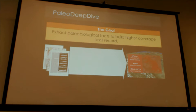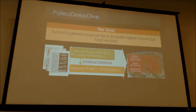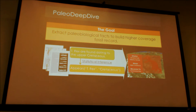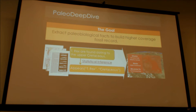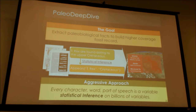We're going to do everything by statistical inference. We view all of the text and OCR output as observations about the real world and build a probabilistic model that uses those observations to predict the most likely dinosaur database from those observations. Every character, word, and part of speech can be a random variable. We're proposing statistical inference on billions of variables. When we started this project, the frameworks could handle tens of documents; over the last years with smart students and great research, we can handle terabyte-scale factor graphs.